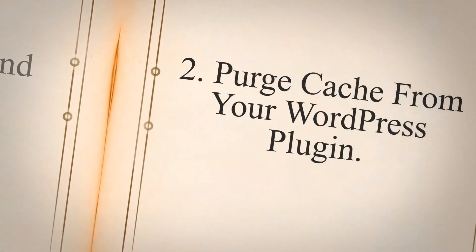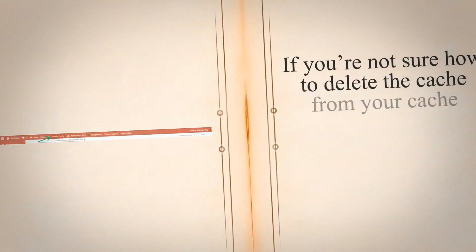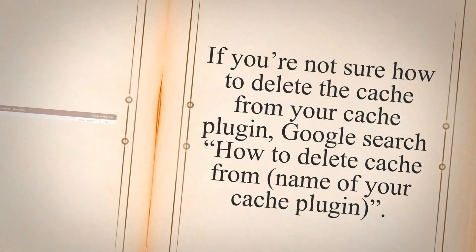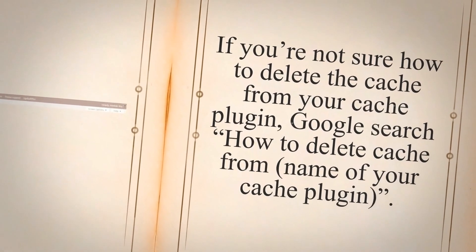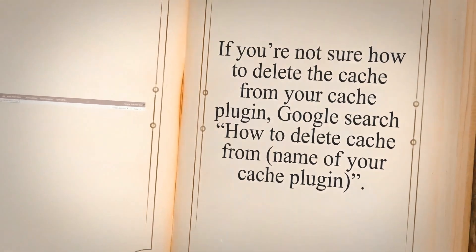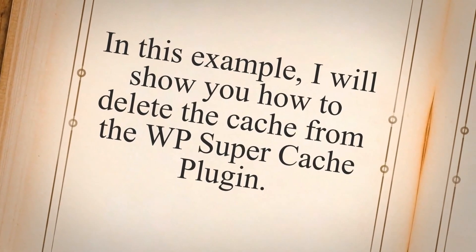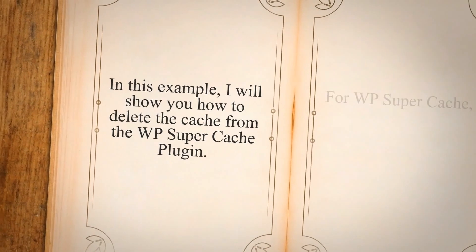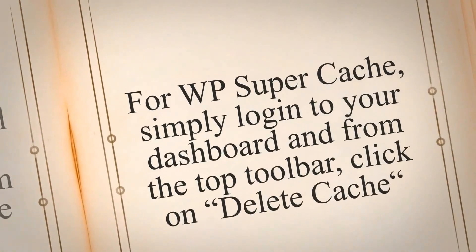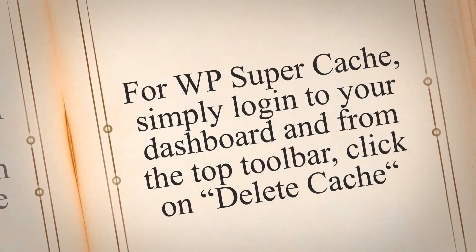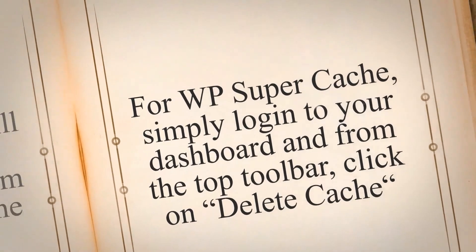Step 2: Purge cache from your WordPress plugin. Log in to your WordPress dashboard and, depending on what cache plugin you're using, clear all its cache accordingly. If you're not sure how to delete the cache from your cache plugin, Google search how to delete cache from the name of your cache plugin. In this example, I will show you how to delete the cache from the WP SuperCache plugin. For WP SuperCache, simply log in to your dashboard and from the top toolbar, click on Delete Cache.